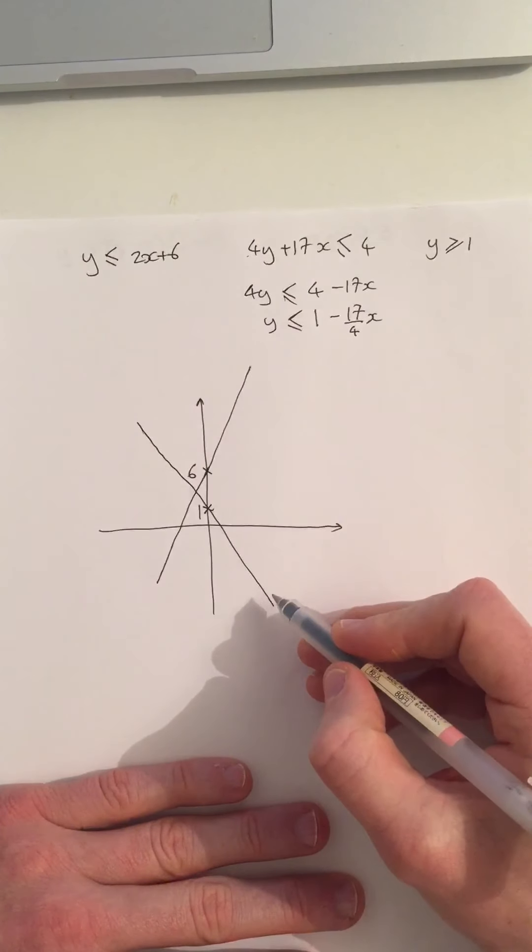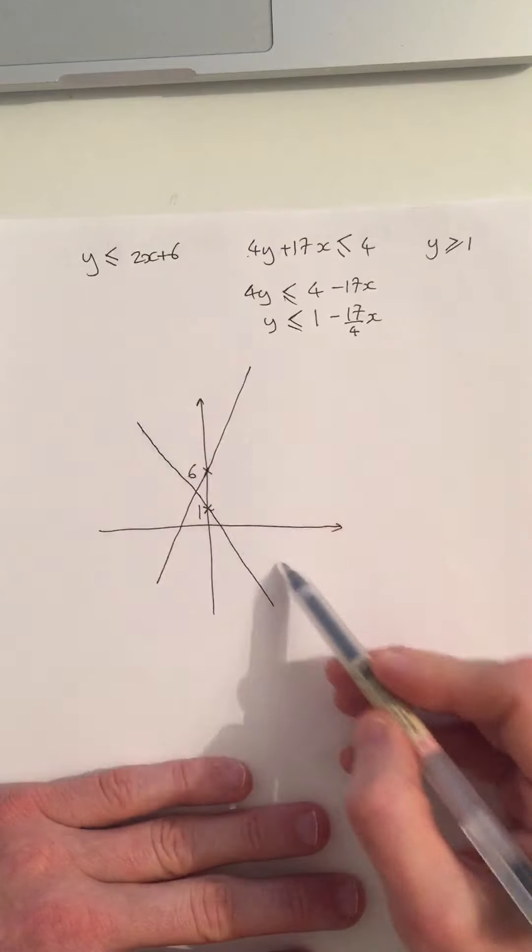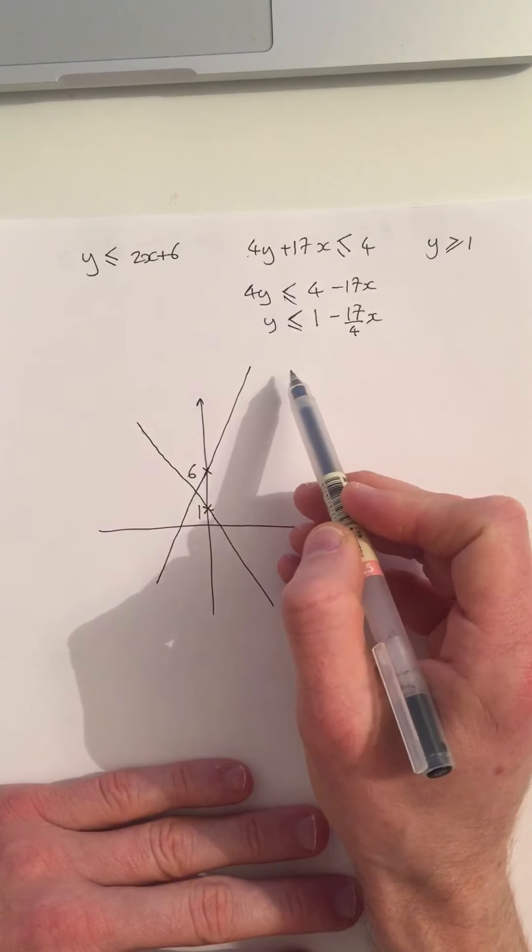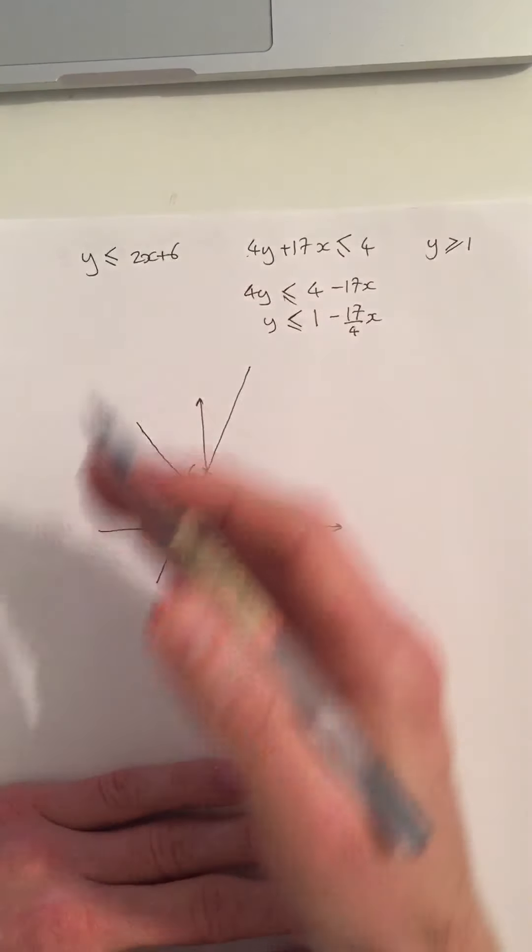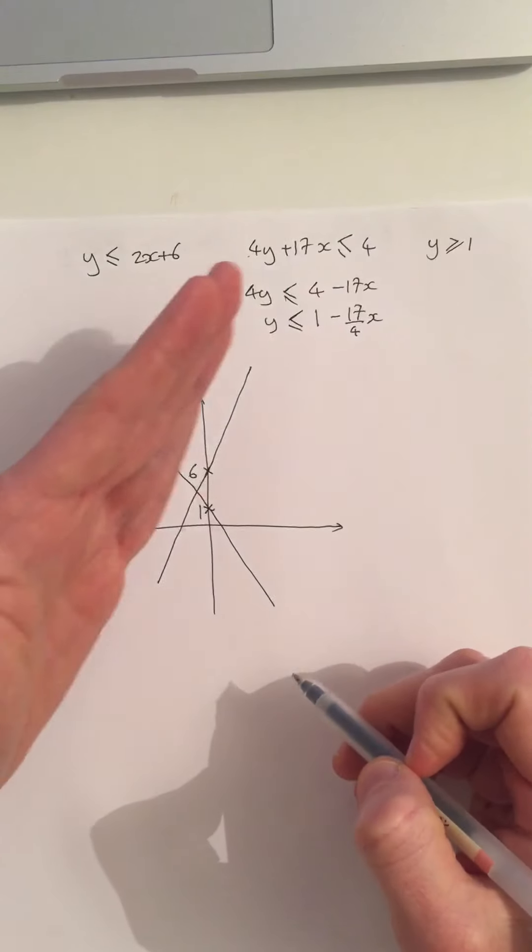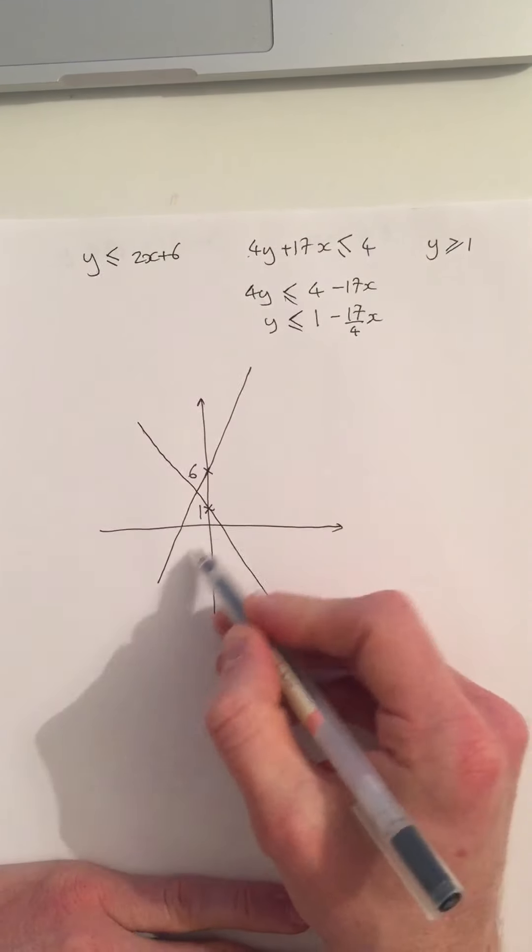So everywhere on this line, the y coordinate has to be, everywhere on the line, y equals 1 minus 17 over 4x. And I want where it's equal to or below that line. So below, below this line. So so far I'm looking below this line and below this line. So everything down here at the moment.